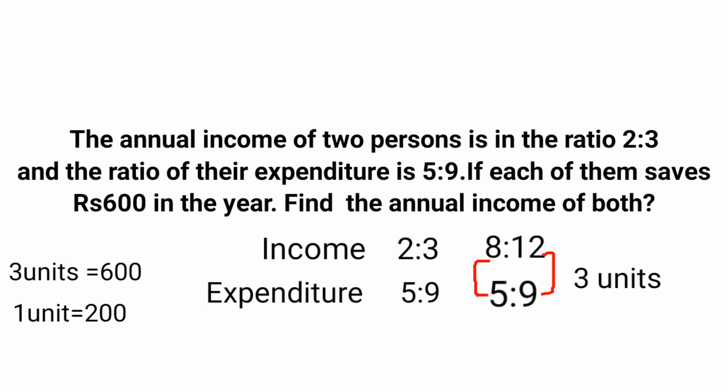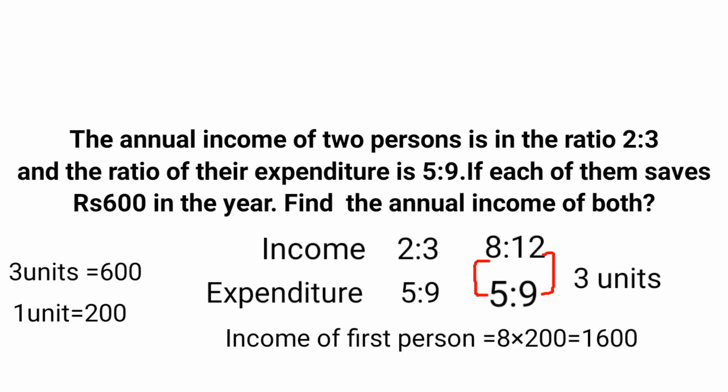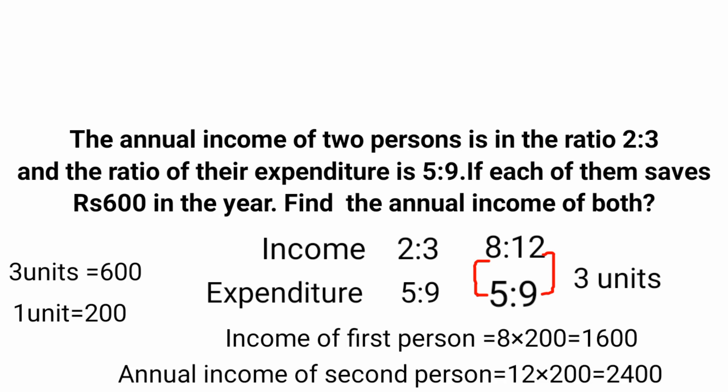The annual income of the first person corresponds to 8 units. Since 1 unit equals 200, multiply 8 by 200 to get 1600. For the second person, the income corresponds to 12 units, so multiply 12 by 200 to get 2400.